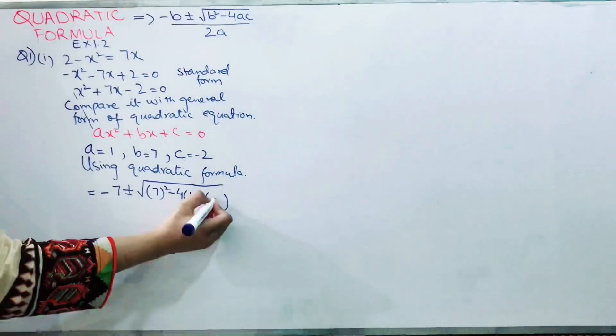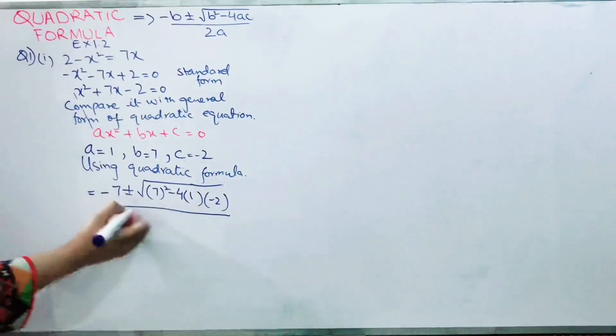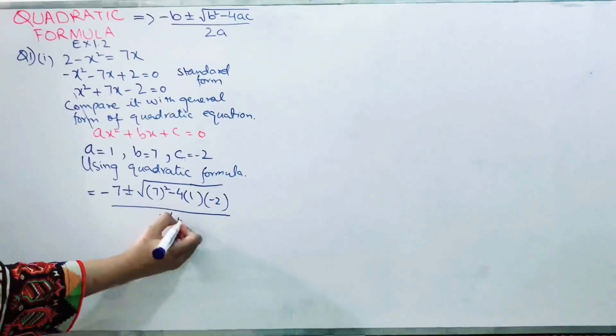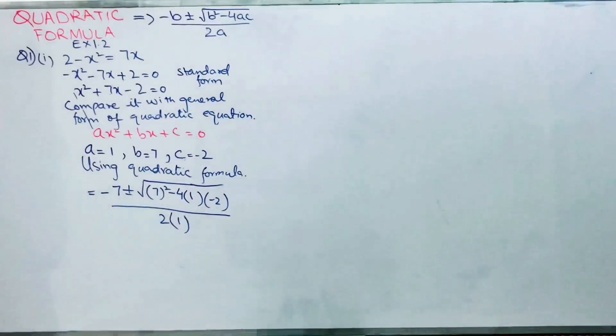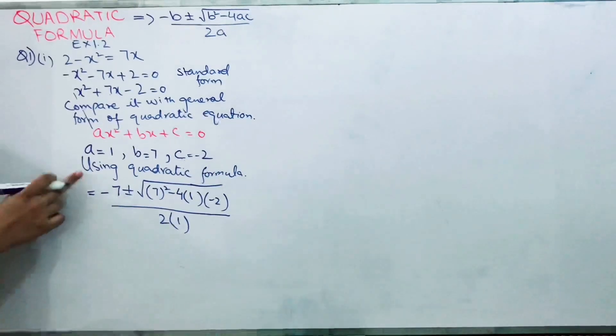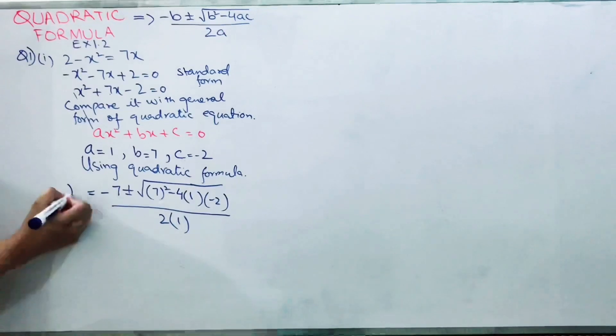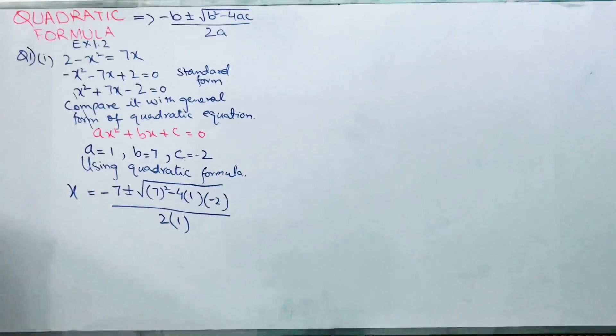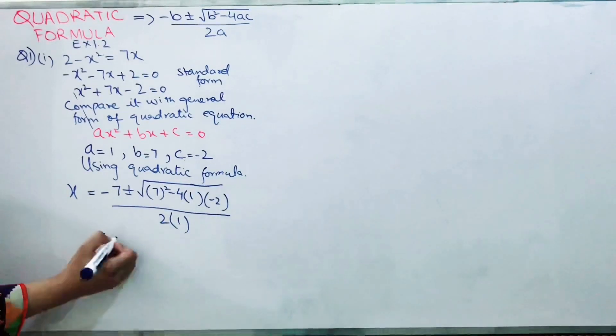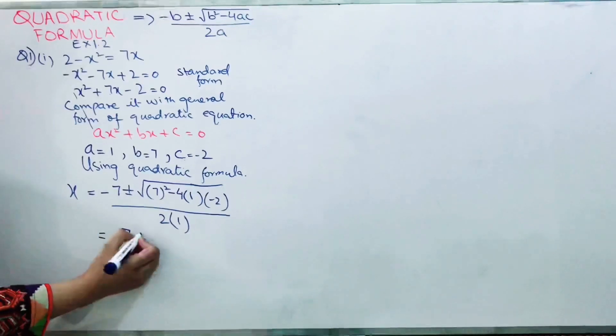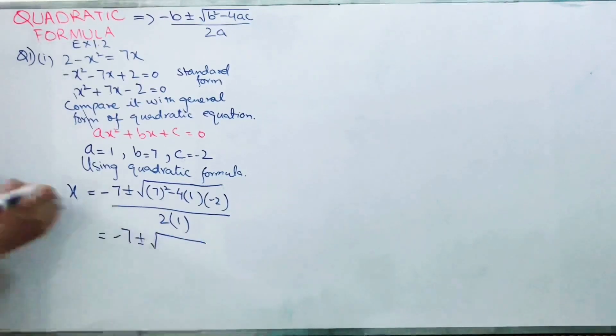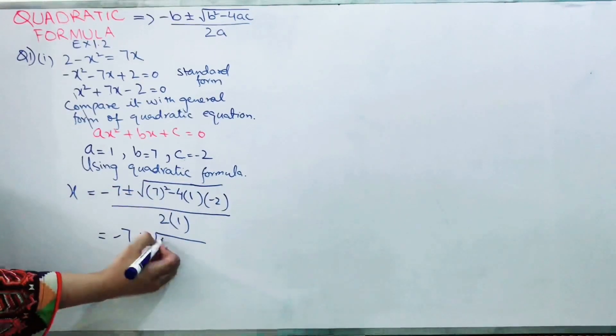Using the quadratic formula, you're just substituting the values. Here we are solving it for x. In the next step, you just have to simplify: minus 7 plus minus under root 7 square is 49